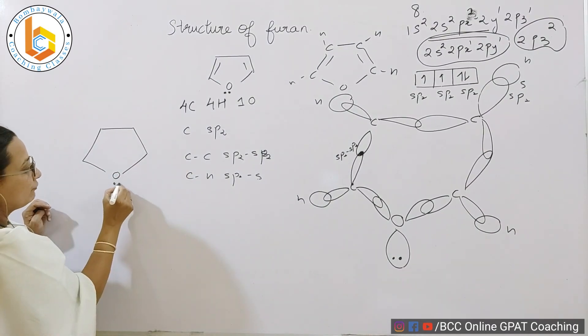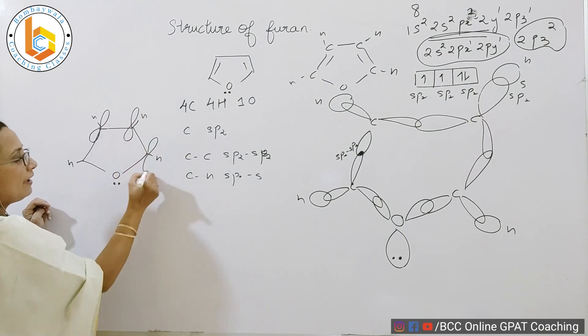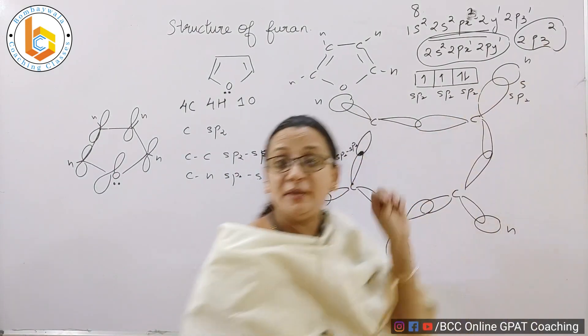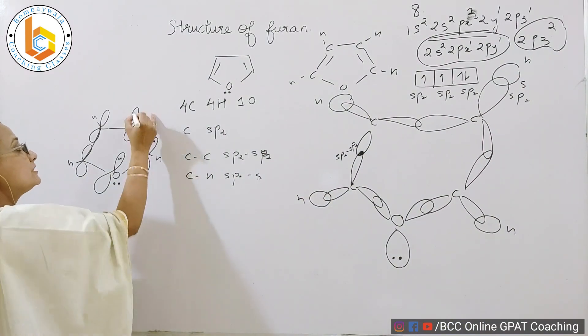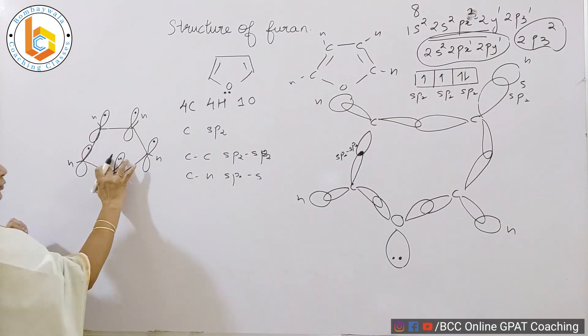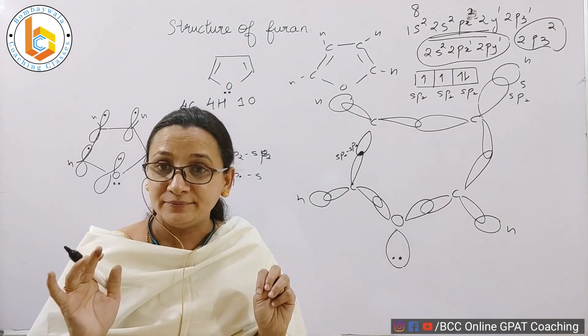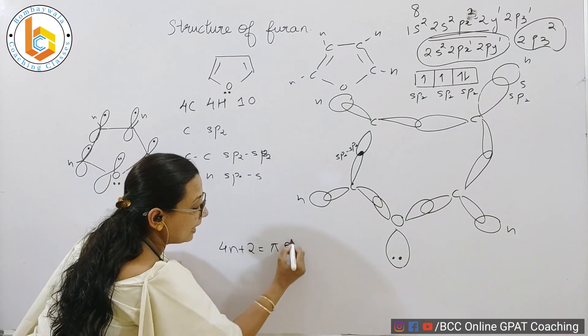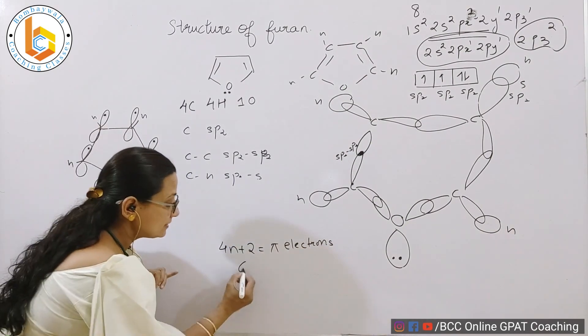This is my carbon and this is my oxygen with a pair of electrons lying outside the ring. Every carbon contains a pz orbital and oxygen also contains a pz orbital. The pz orbital of oxygen contains two electrons, whereas the carbons' pz orbitals contain a single electron only. So total number of pi electrons are 6: 2, 3, 4, 5, 6. This makes the structure of furan aromatic because Huckel's rule says that 4n+2 equals the number of pi electrons. 4n+2 equals 6 when n equals 1.